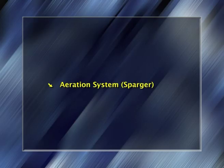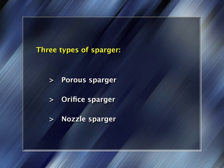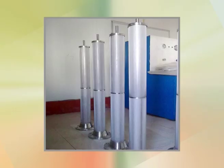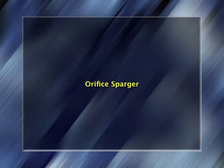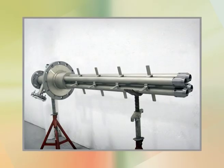The aeration system, or sparger, is a device for introducing air into the fermenter. There are three types of sparger: porous sparger, orifice sparger, and nozzle sparger. 1. Porous sparger: made of sintered glass, ceramics or metal — used only in lab scale, non-agitated vessels. 2. Orifice sparger: used in small stirred fermenters — it is a perforated pipe kept below the impeller in the form of crosses or rings. 3. Nozzle sparger: mostly used in large scale — it is a single open or partially closed pipe positioned centrally below the impeller; when air is passed through, there is lower pressure loss and it does not get blocked.